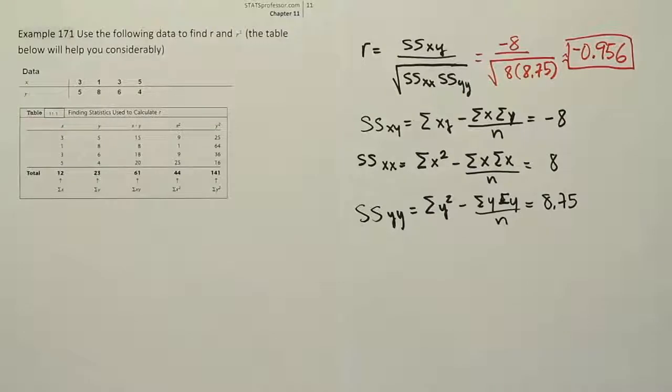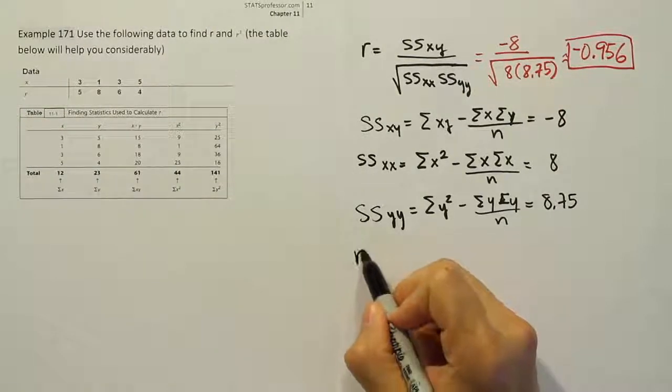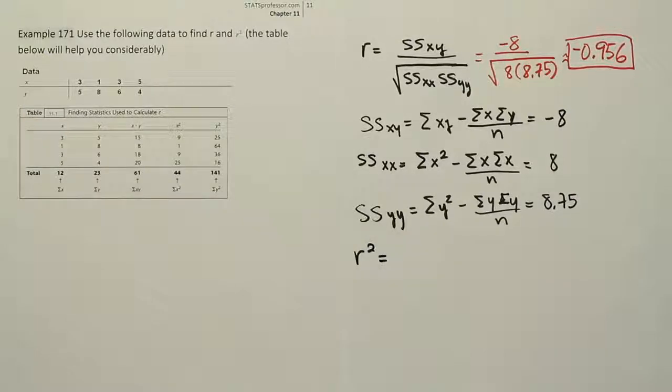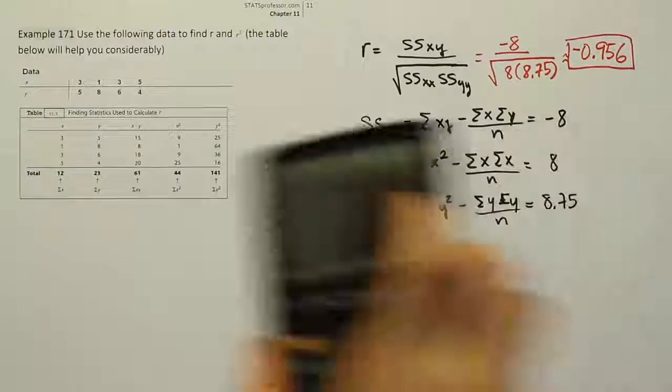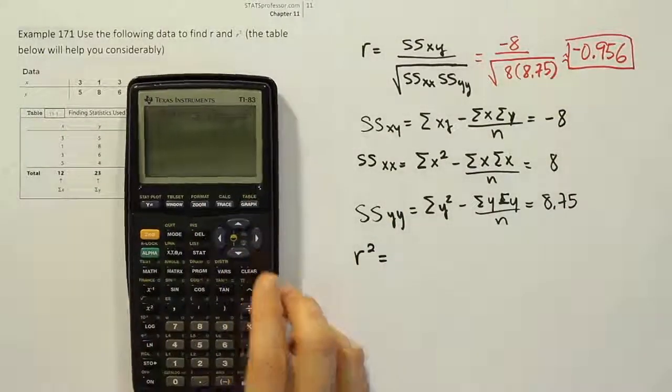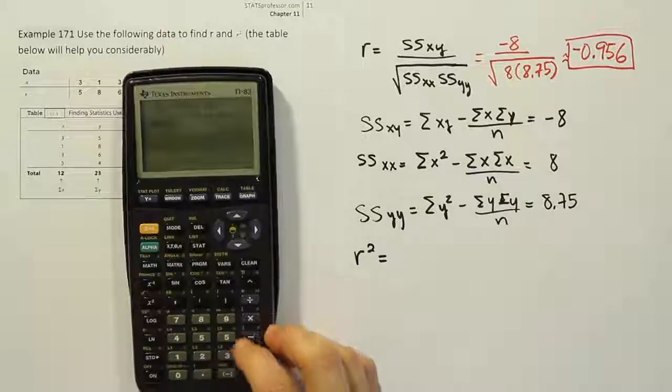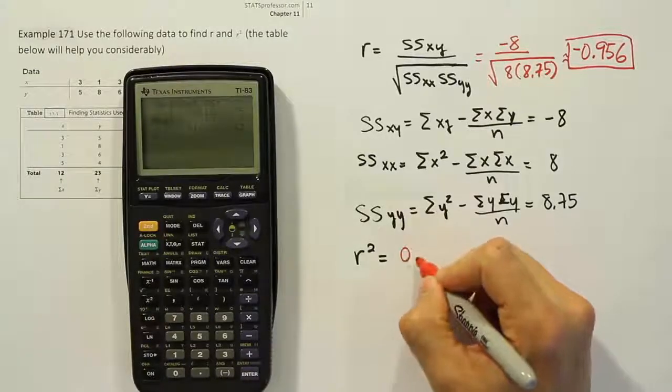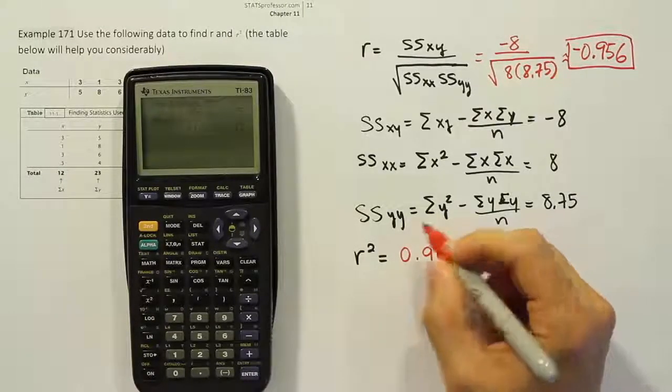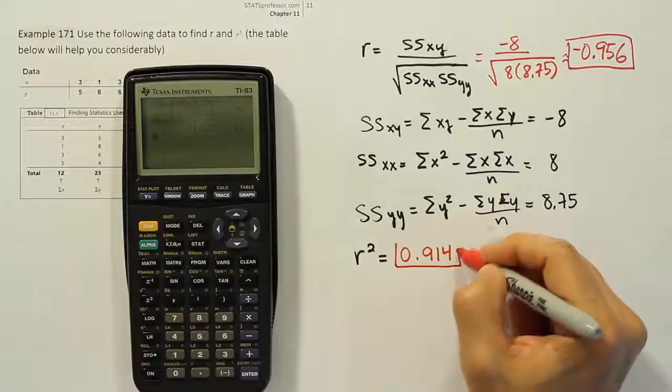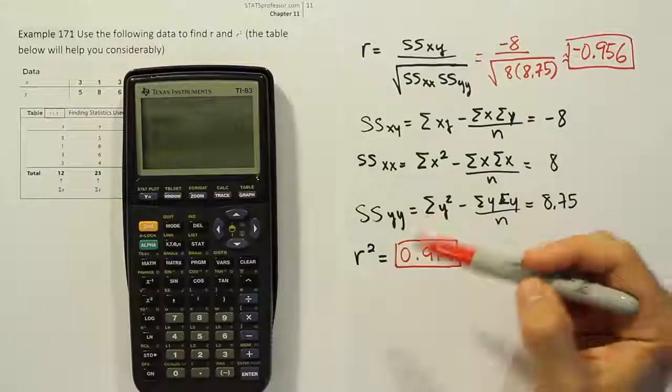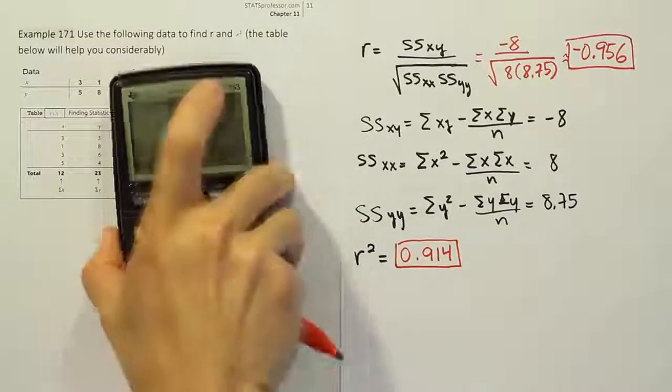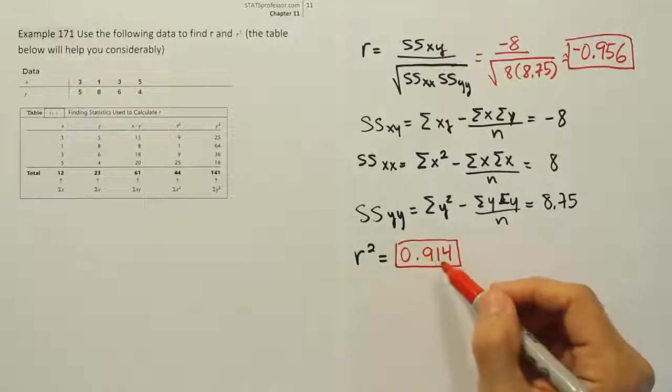All right, now how do we get r squared? Well, in order to figure out r squared, we can simply square the r value. So let's just do that and see what we get. If I take that r value I just found in my calculator and square it, so I'm just going to hit the square button, I'll get 0.914. And I got that just by squaring r. Of course, when you square a negative value, it becomes positive. So our solution is 0.914.